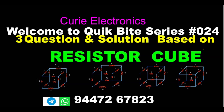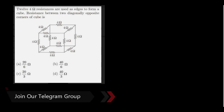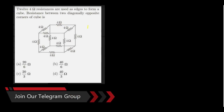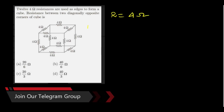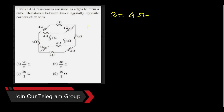Welcome to Curie Electronics. Today we are going to see how to solve the resistor cube problem. This is a popular question. All edges of the cube have the same resistor value — if r equals 4 ohms then all edges have 4 ohm resistors. We can solve this problem in 5 seconds or less.